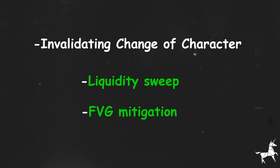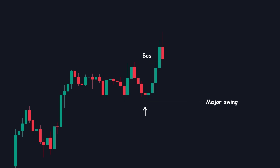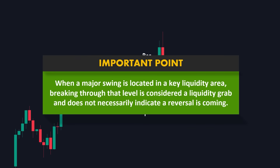This might seem complicated, but it will make sense in a minute. Here, we have a major swing low that originated this breakout. Breaking below this level signals a valid change in character. However, if you look at the left-hand side, you'll notice that this level is positioned in a significant area of liquidity. Many traders have opened long positions at this level previously, placing their stops below it, which means that a large amount of liquidity lies beneath it. To hunt these stop losses, smart money often pushes the price lower to engage the liquidity, and then continues in the same bullish direction. When a major swing is located in a key liquidity area, breaking through that level is considered a liquidity grab and does not necessarily indicate a reversal is coming.